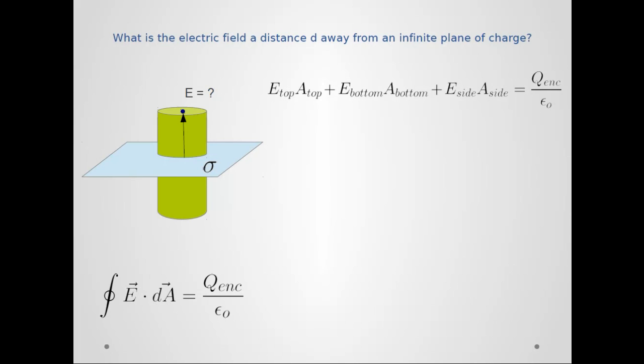So I can rewrite that as the flux going through the top (E_top·A_top) plus the flux going through the bottom plus the flux going through the sides. And that all equals Q_enc/ε₀. Now we can analyze each of these pieces individually.